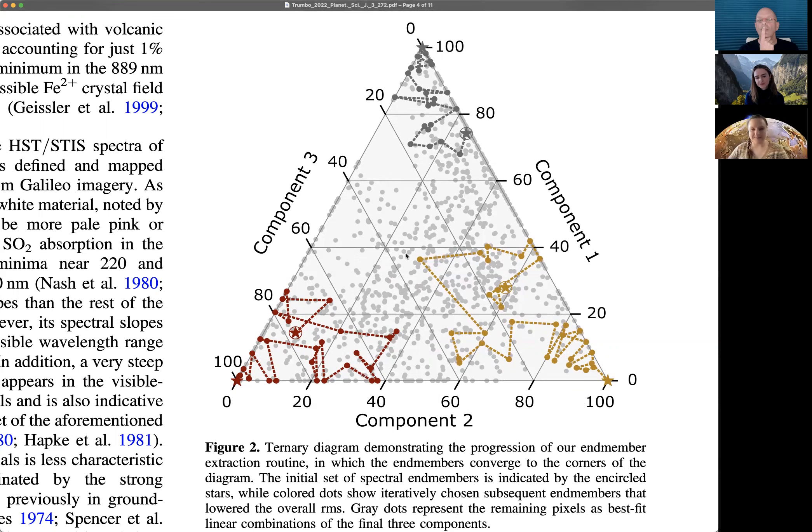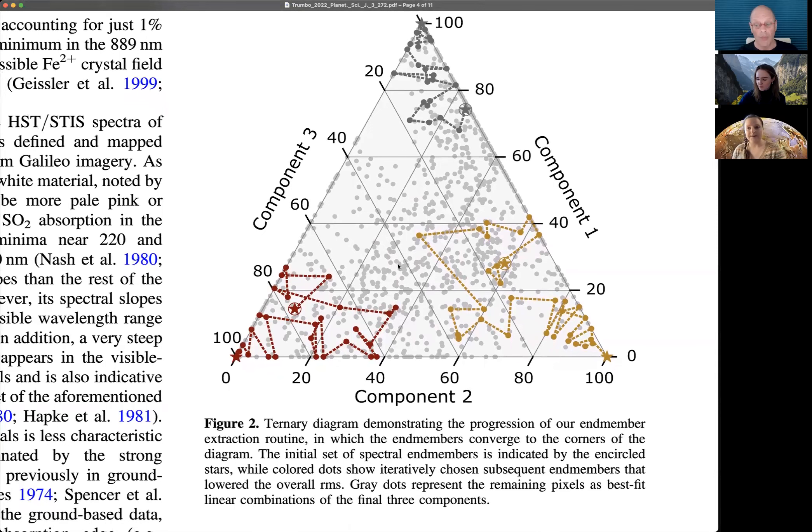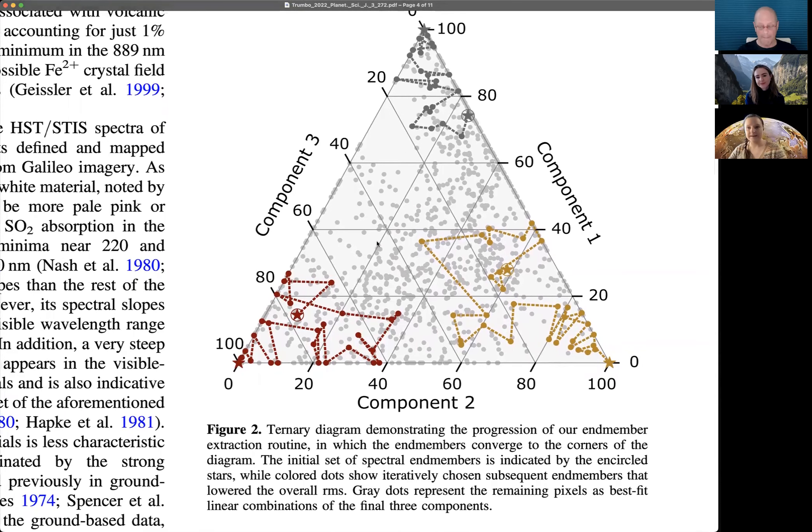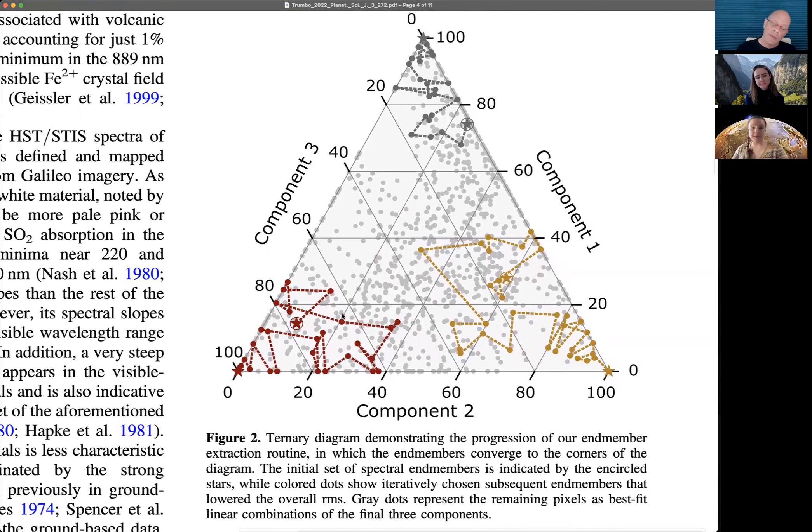When you're looking at spectra, one of the things you might do is take a model or a library of laboratory spectra, combine them together and see what fits your actual spectra on the surface the best, may be indicative of the materials that are there. We took the exact opposite approach and said, let's take individual pixels on Io's surface, combine those together from the three most extreme pixels, and build up a spectral model of every individual pixel from those three most extreme end members on Io's surface.